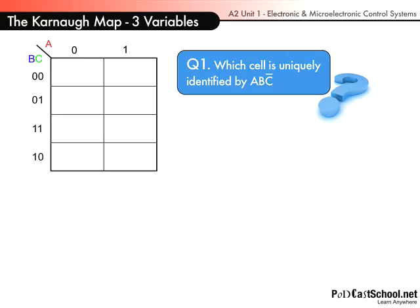Okay, so I've asked a question here. Which cell is uniquely identified by A, B and C bar? Well, we know that it must be A and B must be a 1, because remember we're saying here that A bar is representing a 0. So A first of all has to be a 1. So the only place that A is a 1 is in the right-hand column. So our cell must be somewhere in this column.